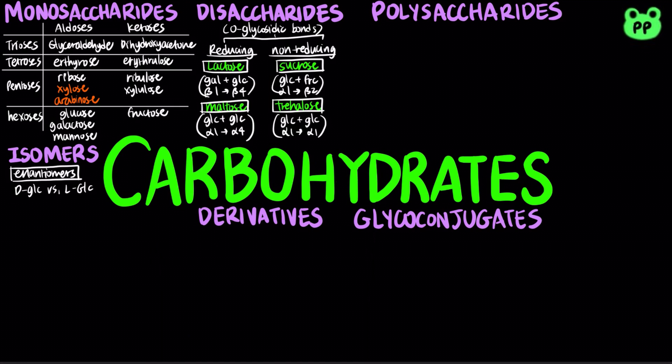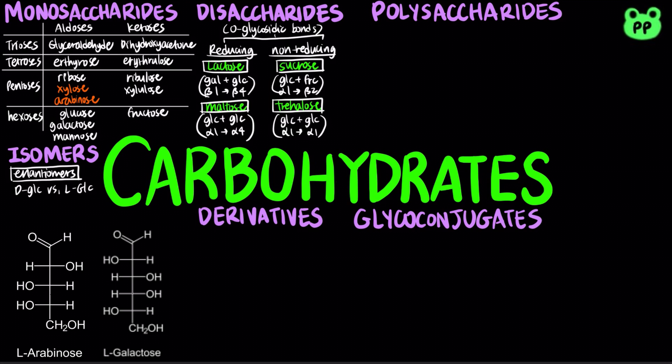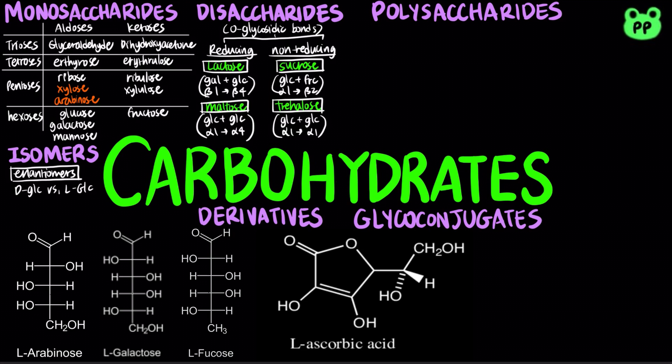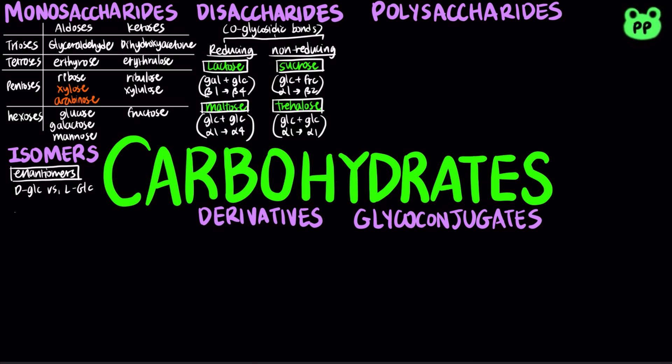Most carbohydrates occur in D-form. Some L-form sugars include L-arabinose, L-galactose, L-fucose, and L-ascorbic acid.